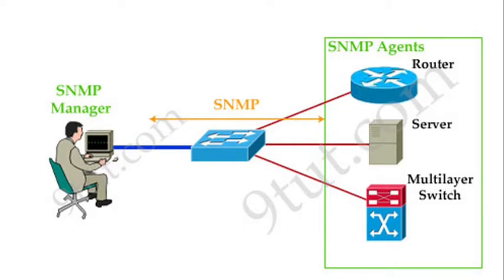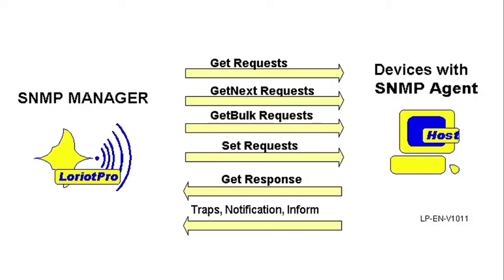The SNMP protocol is separated into two components: the SNMP agent and the SNMP manager. Our device will be working as the SNMP agent. The only operations the SNMP agent is allowed to do is send traps or send responses to the SNMP manager. Other requests such as GET, GET-NEXT, GET-BULK, and SET are initiated by the SNMP manager.